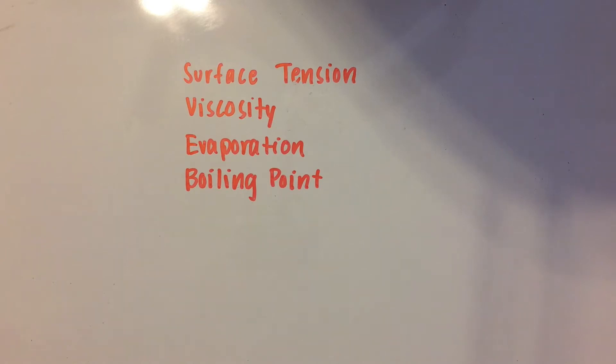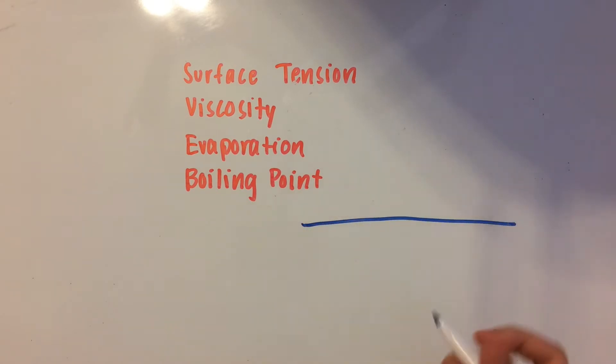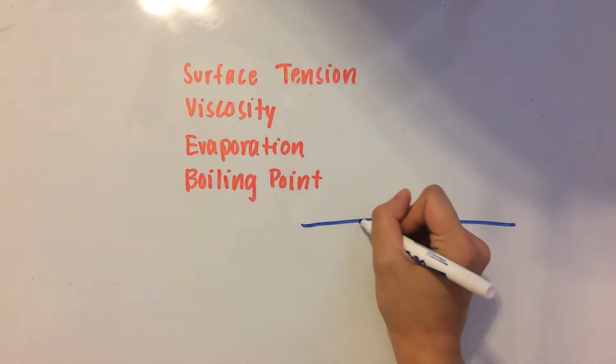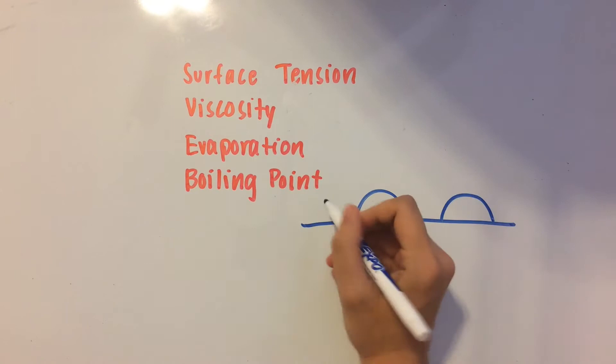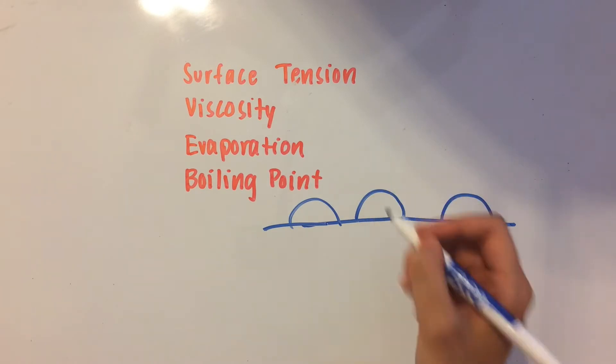There are a couple of different liquid properties that we're going to go over today, and surface tension happens to be the first one. Let me draw out my example first. We have a car surface with a ton of beads of water on top of it. This is an example of surface tension,